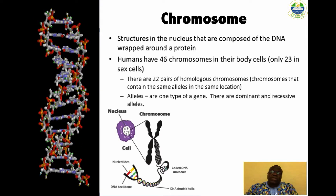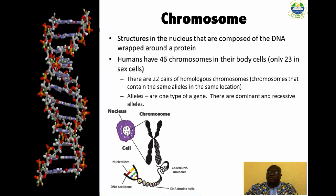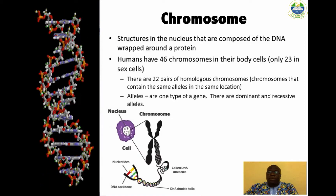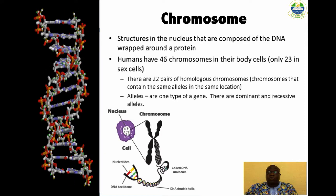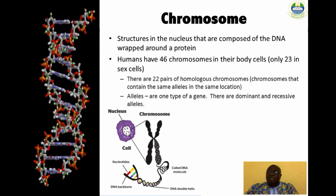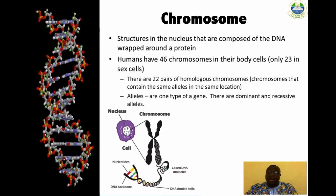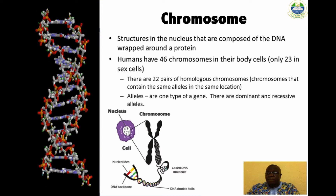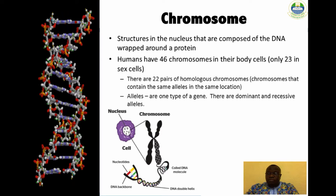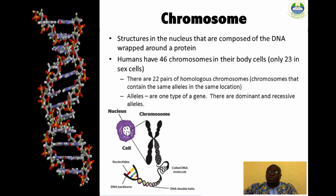Chromosomes are bundles of DNA and protein found in the nucleus of eukaryotic cells. They are very long DNA and associated proteins that carry portions of the genetic information of an organism. Chromosomes are composed of DNA and protein located within the nucleus of our cells, and they determine everything from hair color and eye color to sex.